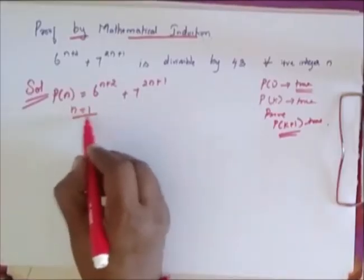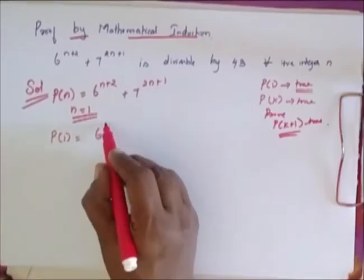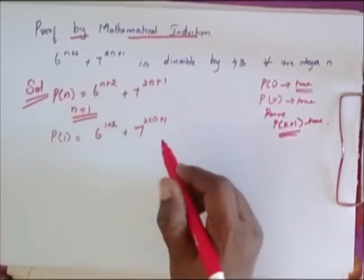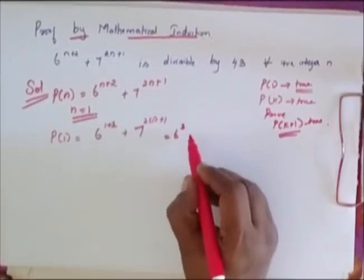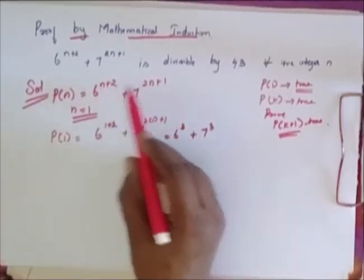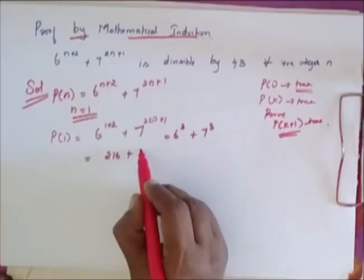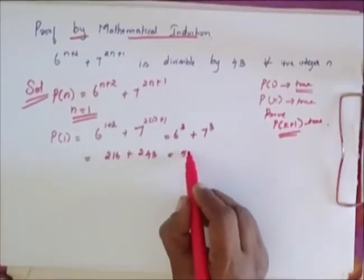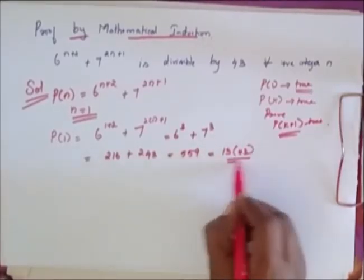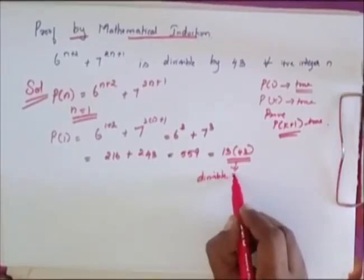When n equals 1, P of 1 is equal to 6 power 1 plus 2 plus 7 power 2 into 1 plus 1, which equals 6 power 3 plus 7 power 3. This is equal to 216 plus 343, which equals 559. This 559 can be written as 13 into 43, which shows it is divisible by 43.